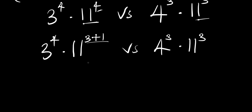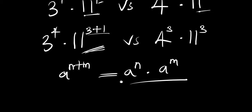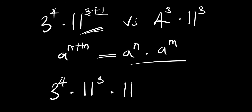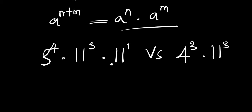Now we apply the identity: if you have a raised to the power of n plus m, this equals a raised to the power of n times a raised to the power of m. Applying this, we get 3 raised to the power of 4 times 11 raised to the power of 3 times 11 raised to the power of 1, versus 4 raised to the power of 3 times 11 raised to the power of 3.